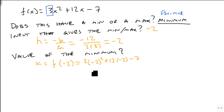-2 squared is 4, times 3 is 12. 12 times -2 is -24, minus 7. -12, minus 7. Our minimum value then is -19. That's the lowest this function gets to.